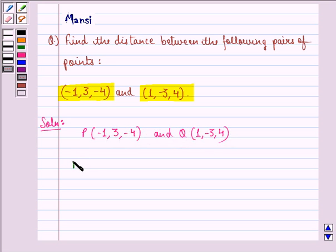we can say that PQ, that is, the distance between P and Q is given by square root of (1 minus (-1)) whole square, plus ((-3) minus 3) whole square, plus (4 minus (-4)) whole square.